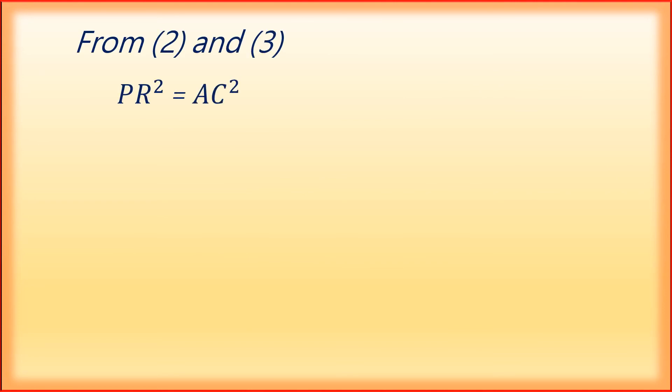From equations 2 and 3, since the left-hand sides are equal and the right-hand sides are equal, we get PR square is equal to AC square, which means PR is equal to AC.